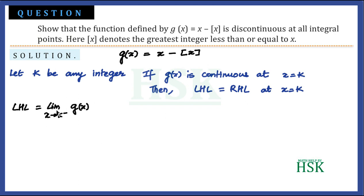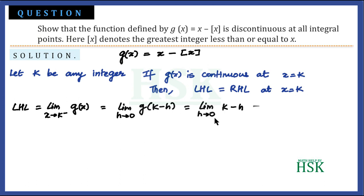The left-hand limit as x tends to k⁻ equals the limit as h tends to 0 of g(k − h), which equals the limit as h tends to 0 of k − h minus the greatest integer of (k − h). Now k − h is a value less than k, so the greatest integer less than or equal to (k − h) is equal to k − 1.